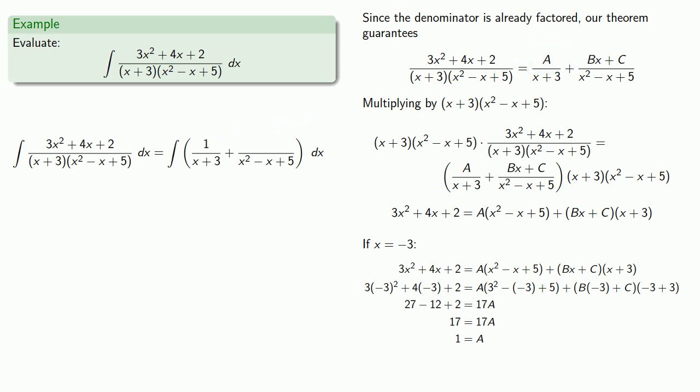Now remember that we chose x equals -3, because that would make one entire term disappear. However, we have a problem. The x value that will make this first term disappear is going to be an irrational number.